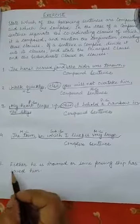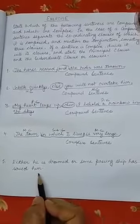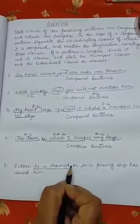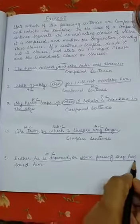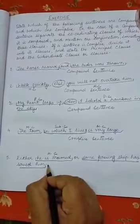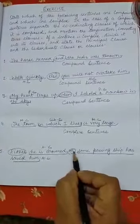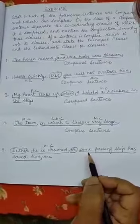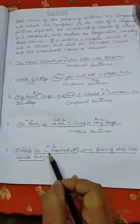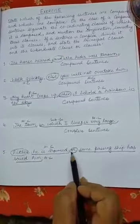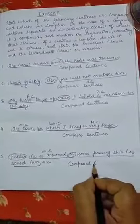The next sentence is: 'Either he is drowned or some passing ship has saved him.' 'He is drowned' is your main clause and 'some passing ship has saved him' is also a main clause, both complete in meaning. 'Either' and 'or' are the connecting conjunctions — a compound conjunction — so this is a compound sentence with two principal clauses.